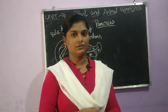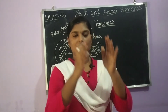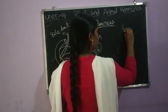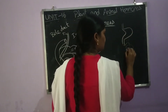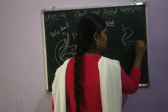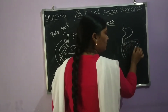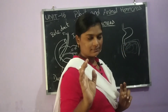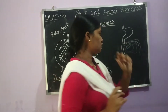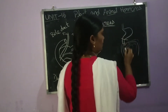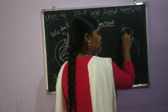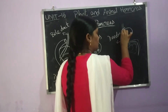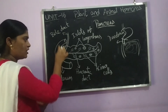Where is the pancreas located? In the digestive system, there is a stomach connected to the small intestine. The small intestine has three segments. The first portion of the small intestine is the duodenum. The duodenum is the first region — it forms a loop, and the tube is bent in that area.